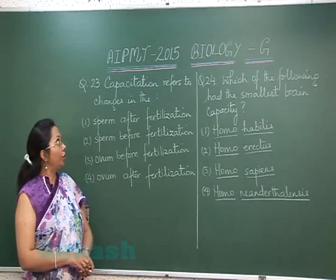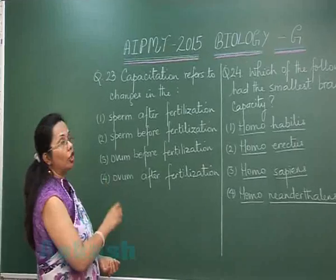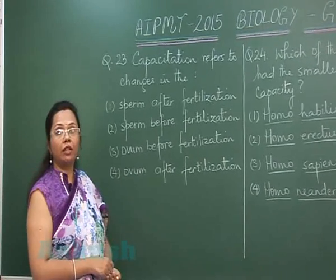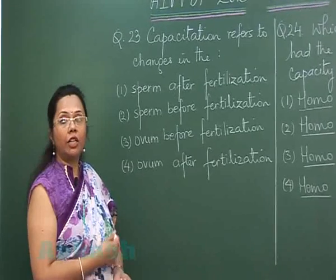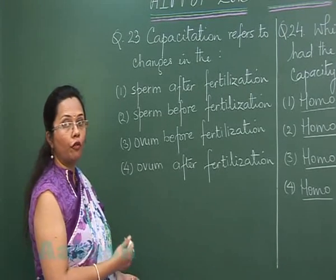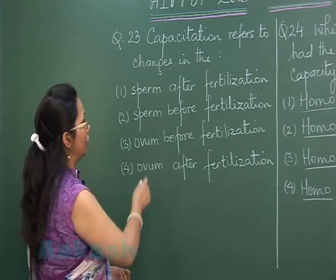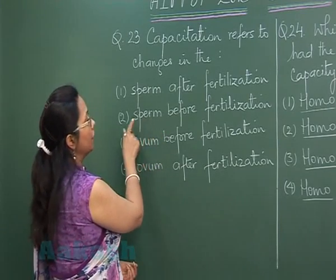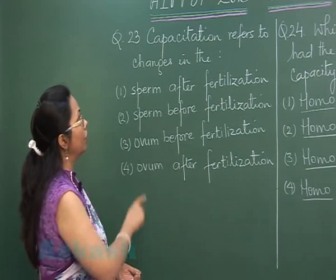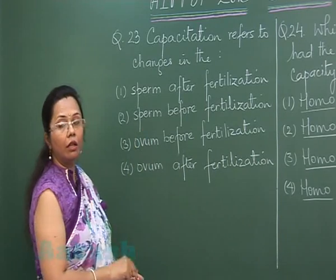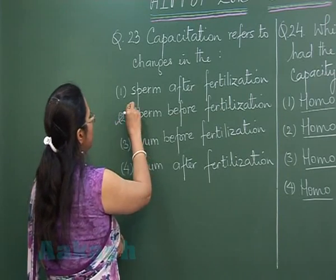Question number 23 is about capacitation. Capacitation is a process where the sperm gains the ability to fertilize — it attains fertilizing capacity. This ability is attained before fertilization, and choice number 2 is 'sperm before fertilization.' These changes occur in the female's reproductive tract. So our answer is 2.